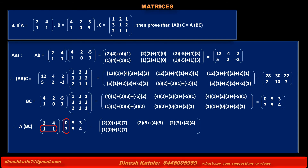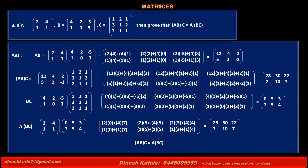First row of matrix A into third column of BC: 1 into 0 plus 1 into 7. Second row of matrix A into second column of BC: 1 into 5 plus 1 into 5. Second row of matrix A into third column of BC: 1 into 3 plus 1 into 4. Solving each term, we get the matrix [28, 30, 22; 7, 10, 7]. Thus matrix (AB) into C is equal to matrix A into (BC).